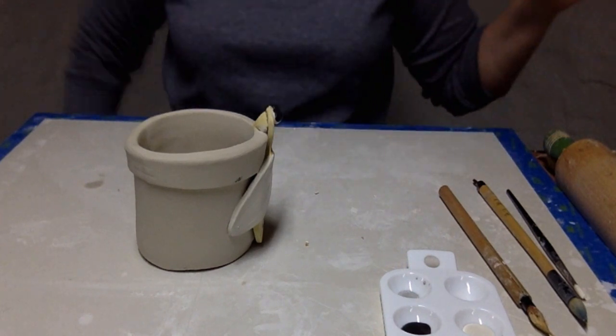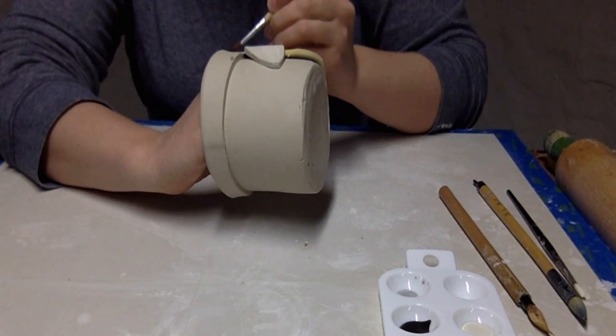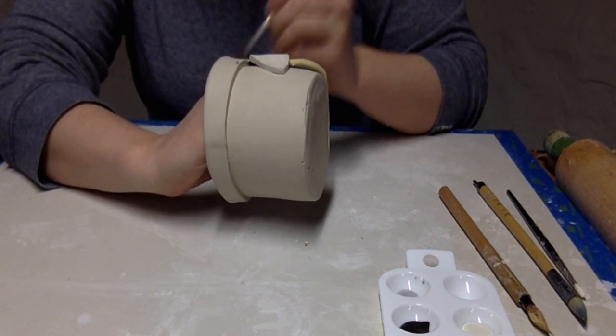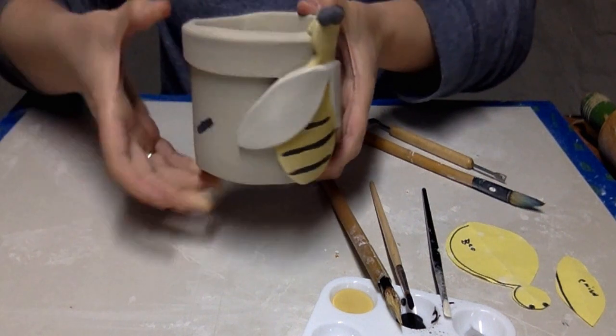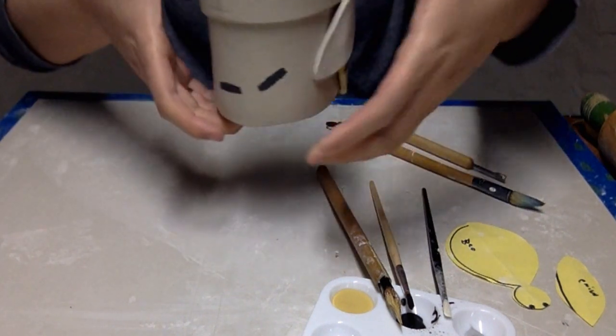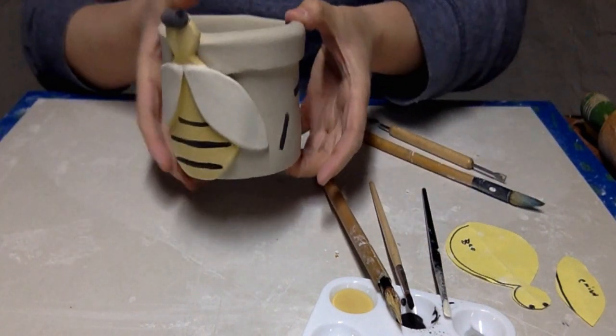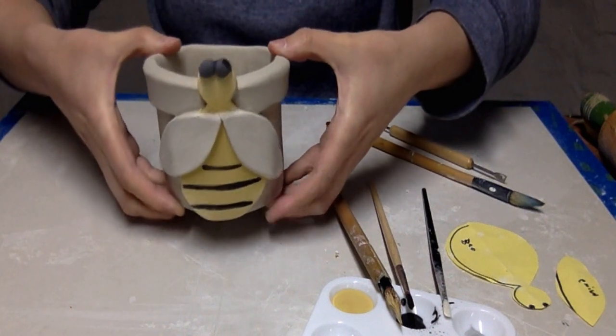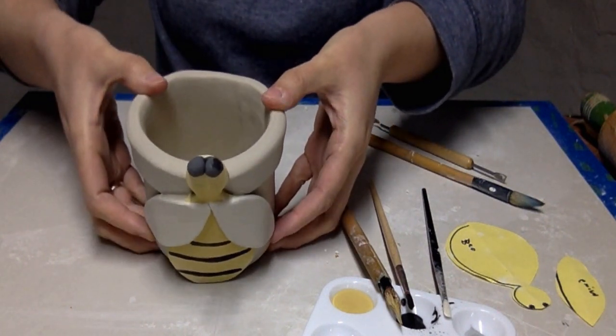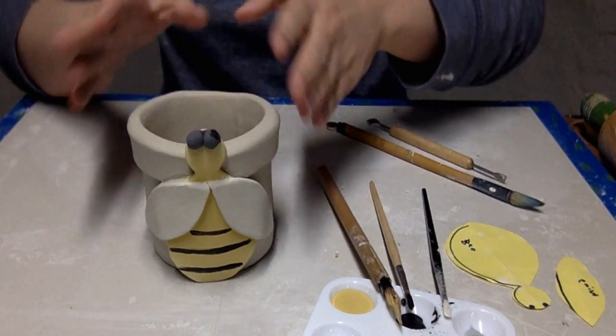I finish by painting the black stripes and doing another coat of black on the bee's eyes. Here's the finished piece. I've painted black dotted lines all around the back of the piece to show movement, like the bee could be flying around the whole pot. Once the piece is fired, you'll be able to put a plant inside the pot. And for that, thanks for watching!